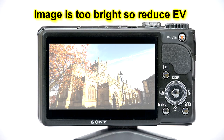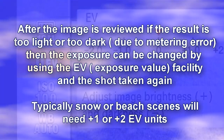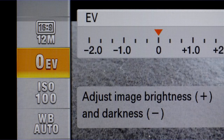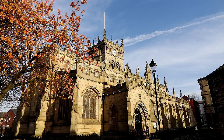If when we've taken an exposure using the P mode the resulting image is too light or too dark, we can adjust the way the camera treats this image by making changes to the EV control and then reshooting. Going minus makes the scene darker and going plus makes the scene lighter.